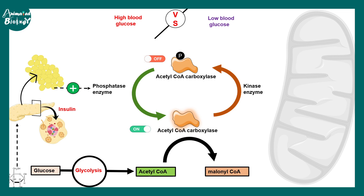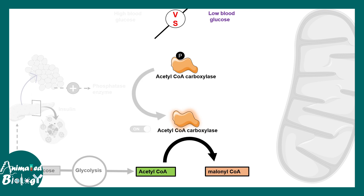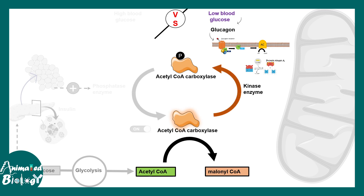On the other side, when blood glucose is low, insulin is absent because insulin is glucose-sensitive. In that case, glucagon takes charge and activates the kinase enzyme, converting acetyl-CoA carboxylase into its inactive conformation. No malonyl-CoA forms and no anabolism happens. This makes sense because in a starving state, the body would not waste energy making new molecules — it would break down existing ones to get energy.